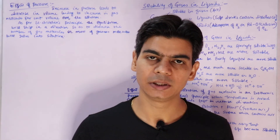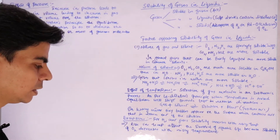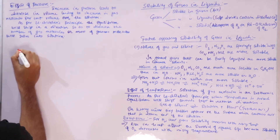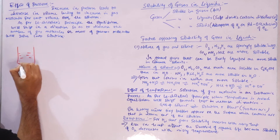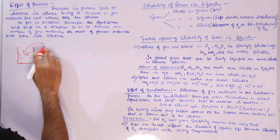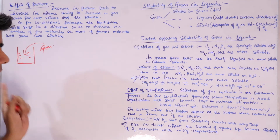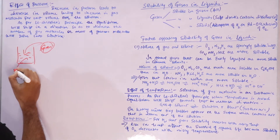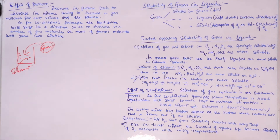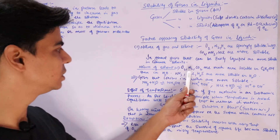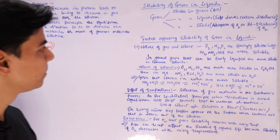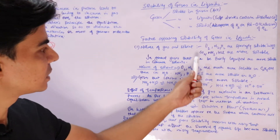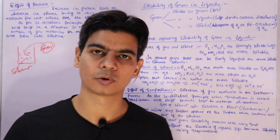Now let's go through the factors that affect the solubility of gases in liquids. The dissolution of gas in liquid depends on both the nature of the gas and the nature of the solvent. Gases like oxygen, nitrogen, and hydrogen are sparingly soluble in water, whereas carbon dioxide, ammonia, and HCl are more soluble in water.